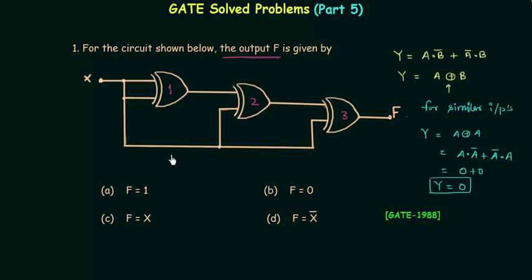Now we will find the output f of this circuit. We first find the output of the first XOR gate. Both inputs to this first gate are x — you can see the connection — and since we have two identical inputs, the output is equal to zero.